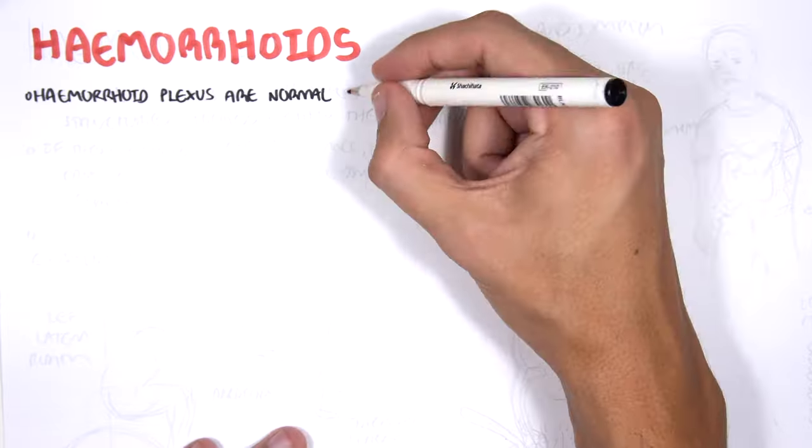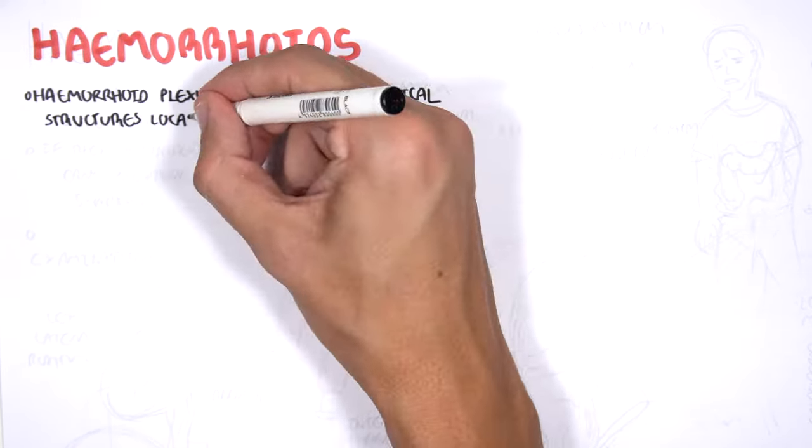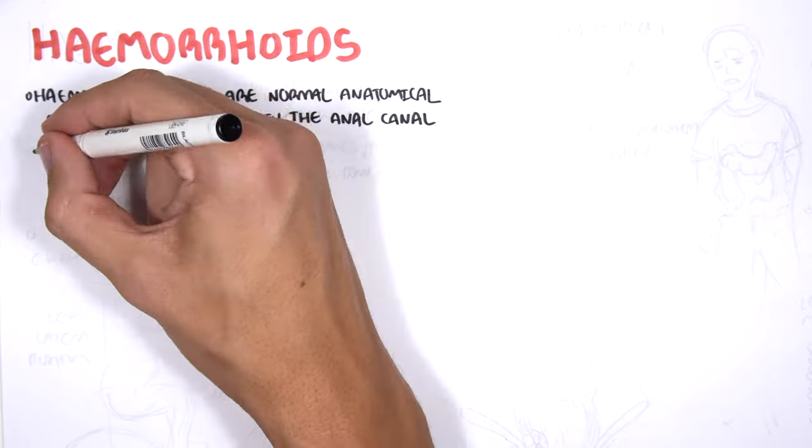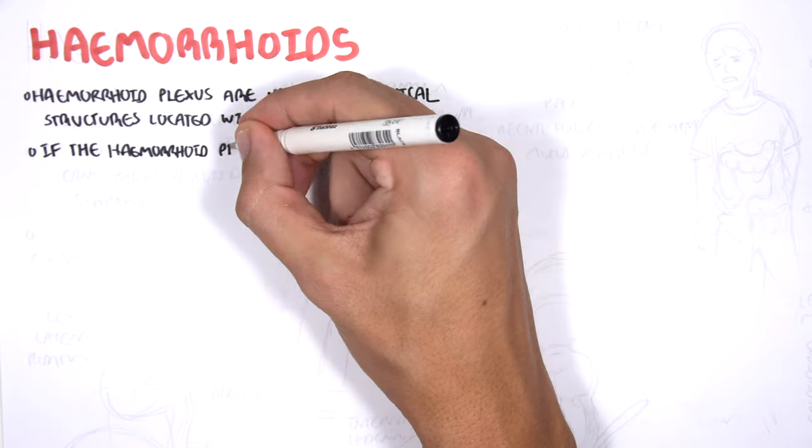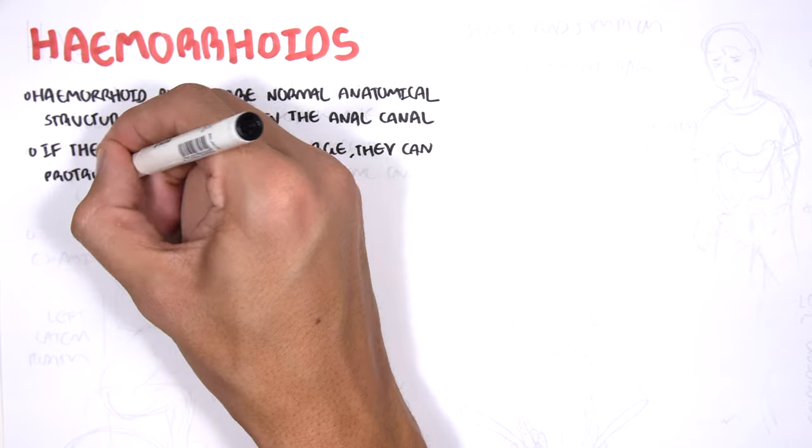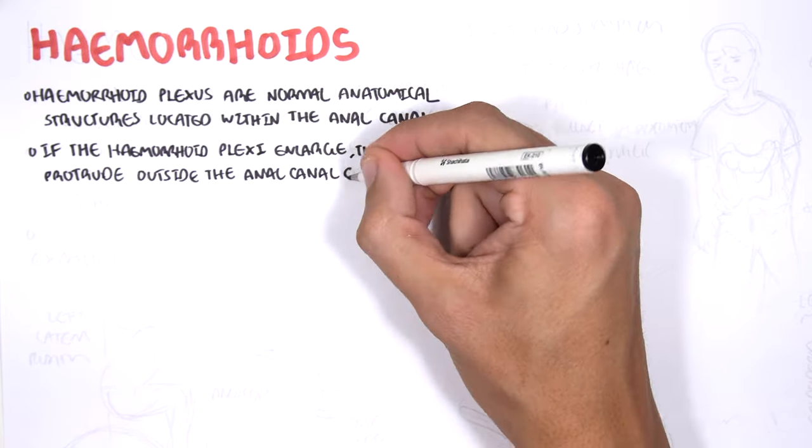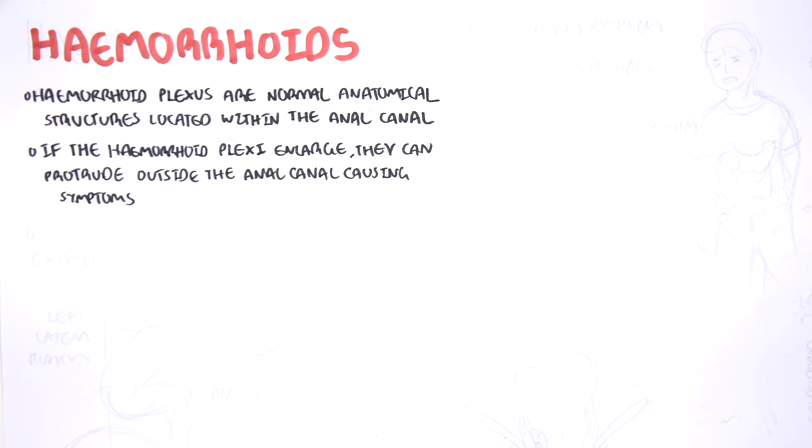Hemorrhoid plexi are normal anatomical structures located within the anal canal. If the hemorrhoid plexi enlarge, they can protrude outside the anal canal, causing symptoms. It is important to know that hemorrhoid plexi essentially are the veins, the rectal veins, forming a plexus. So when we think of hemorrhoids, we have to remember veins.